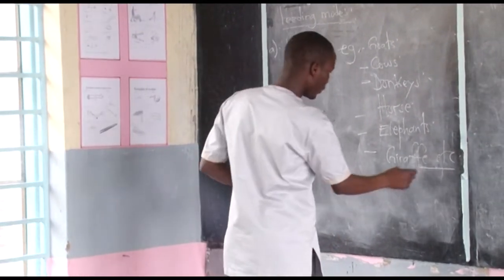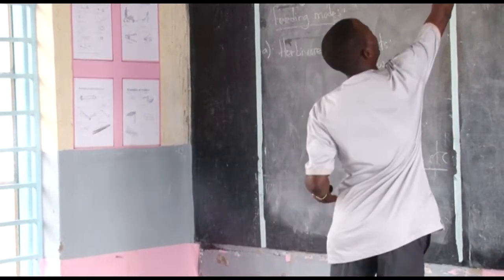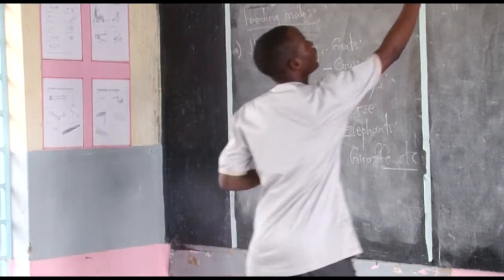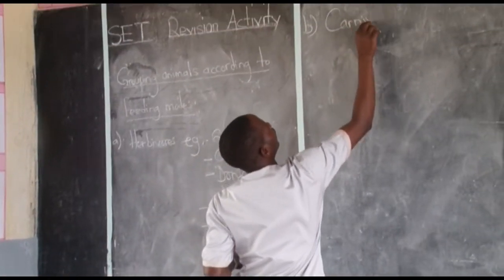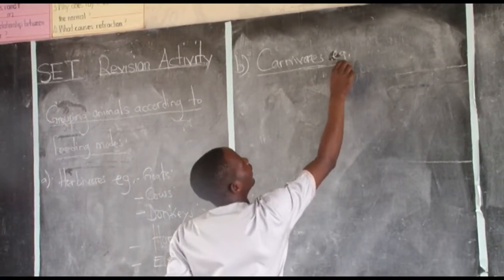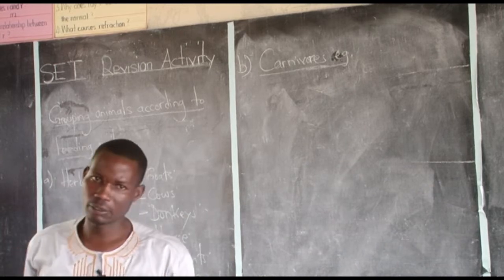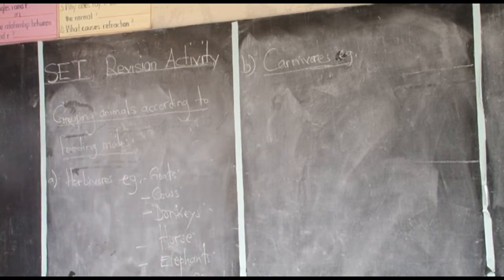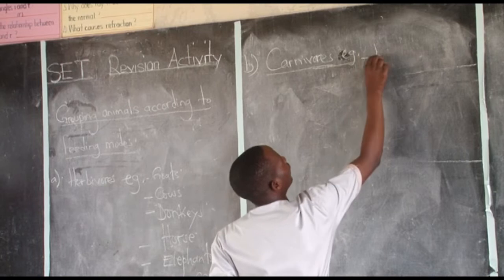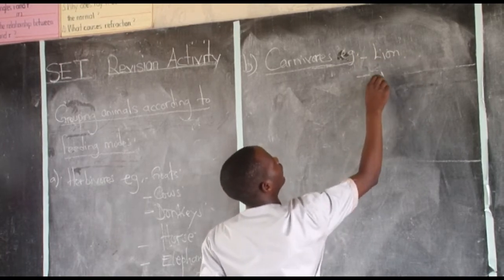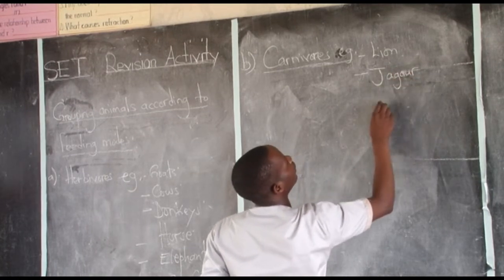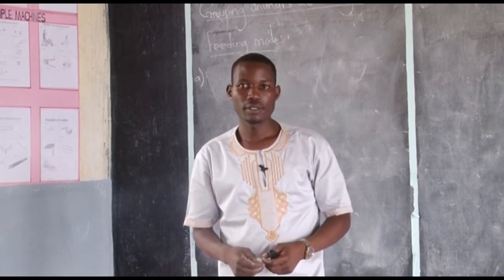Moving to part B — classifying animals based on feeding modes — some animals feed on meat only. These ones we can call carnivores. Carnivores are animals that feed on meat. You don't find them feeding on other stuffs, but majorly meat. Examples include a lion and a jaguar.